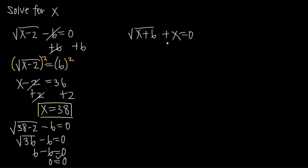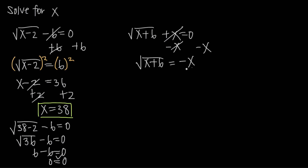In the second example we have the square root of x plus 6, plus x, equals 0. Just as before, our goal is to isolate the square root on its own side of the equation. To do that, we subtract x from both sides, which causes the positive x and negative x to cancel, leaving us with the square root of x plus 6 equals negative x.